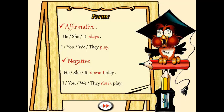Para formar oraciones negativas vamos a usar un verbo auxiliar. Ese verbo auxiliar se lo va a usar de la siguiente manera: con he, she and it vamos a usar doesn't. Y si prestan atención, el verbo principal — que es el verbo que lleva el significado de la oración — porque doesn't, o el auxiliar, doesn't o don't, no tienen significado en sí cuando están siendo usados como verbos auxiliares. Entonces el que lleva el significado, la acción, es el verbo principal. En este caso, el ejemplo es play. Fíjense que cuando armamos el negativo, play desapareció la S de play. Más adelante vamos a ver las reglas para agregar S a los verbos, y allí se van a dar cuenta que hay verbos que terminan en O que agregan ES. Entonces la S que desaparece acá la adquiere el auxiliar.